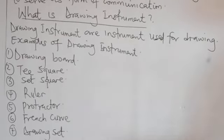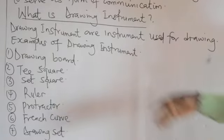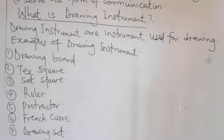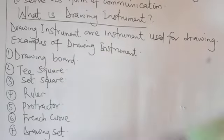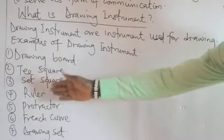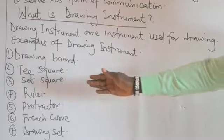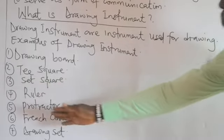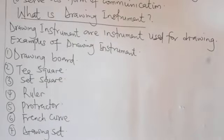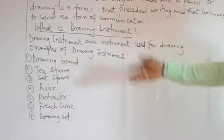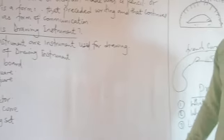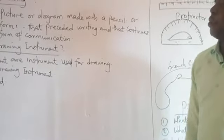What are the examples of drawing instruments? Some examples include a drawing board, T-square, set square, ruler, protractor, French curve, and drawing sets. These are some of the examples of drawing instruments.